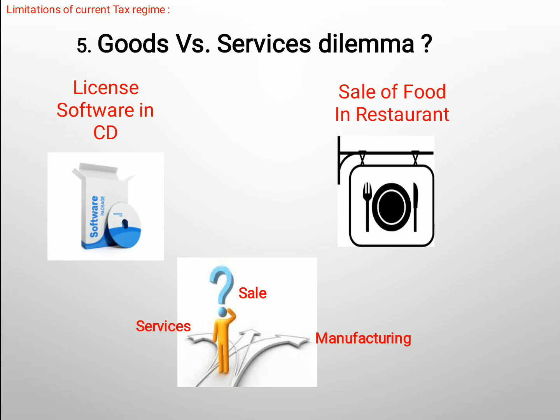Because of all this jumble, people were confused — should they pay VAT, sales tax, or service tax? On top of that, income tax also had to be paid. All these taxes were piling up. Now keep in mind that income tax and GST are two separate things.